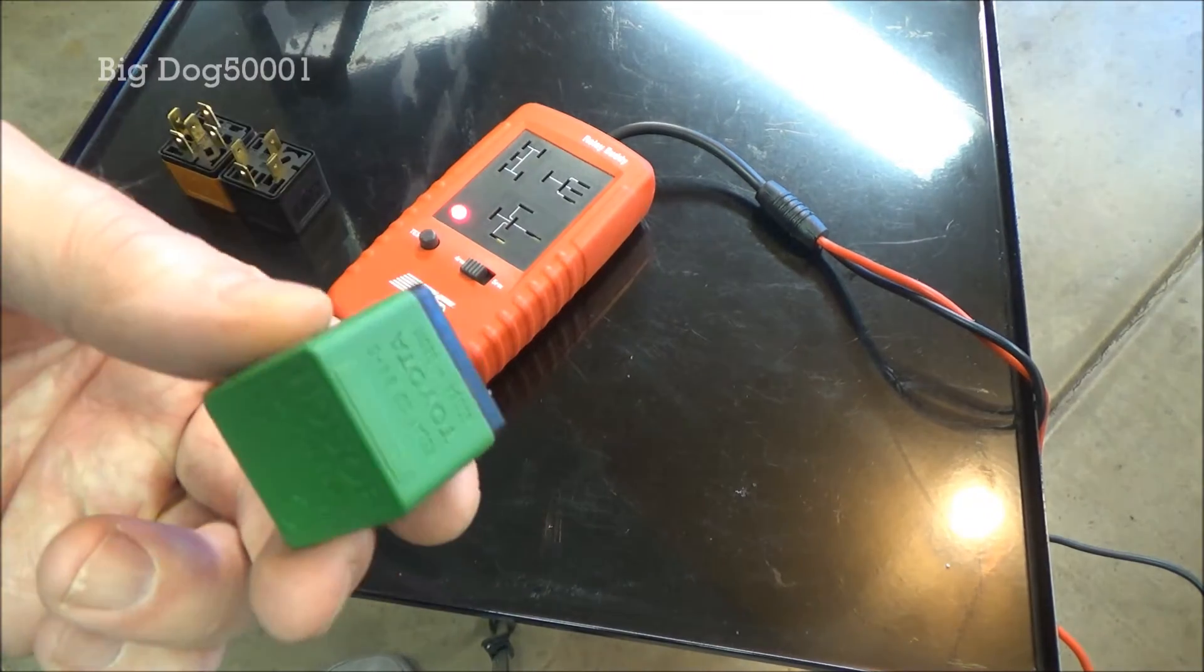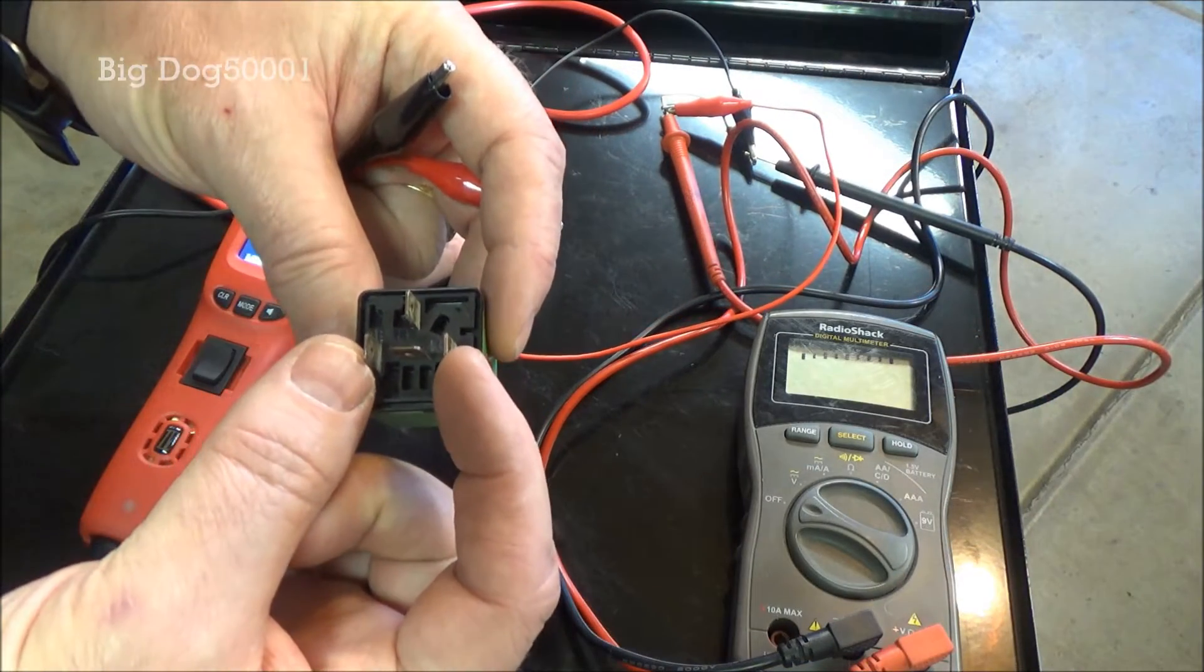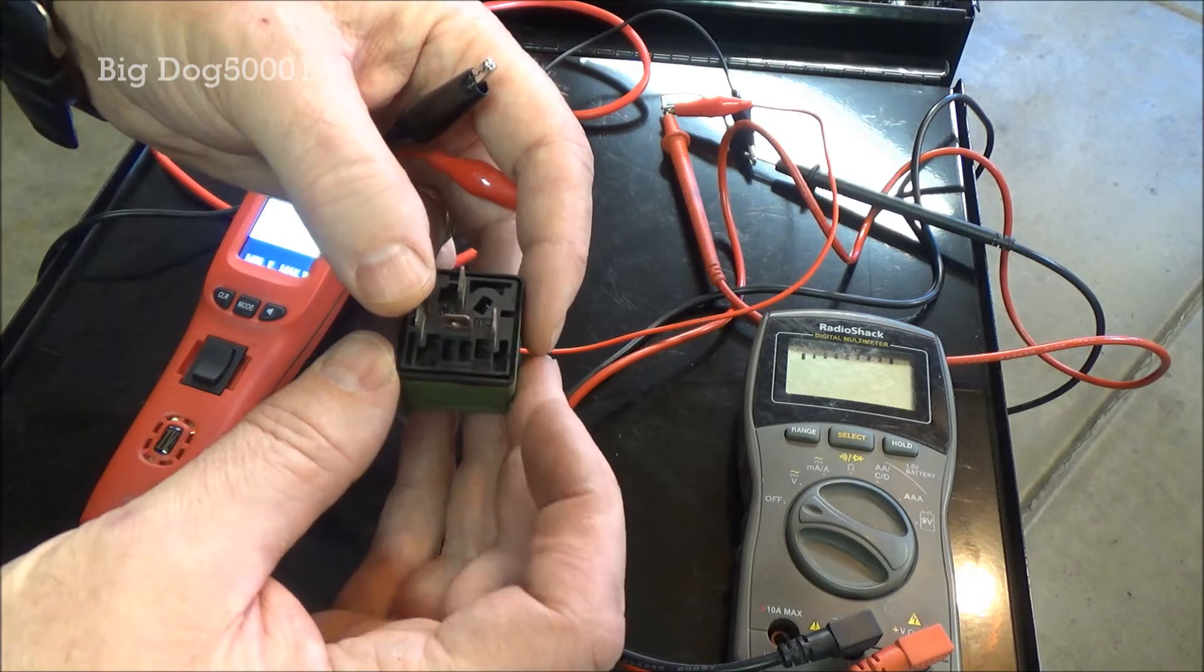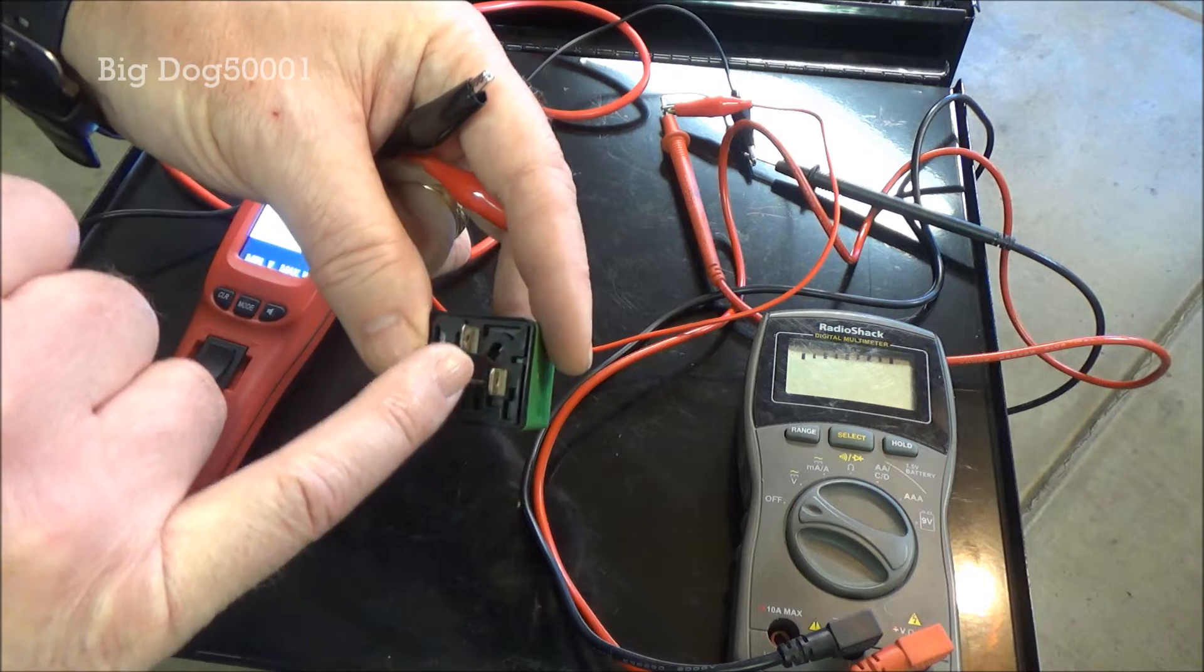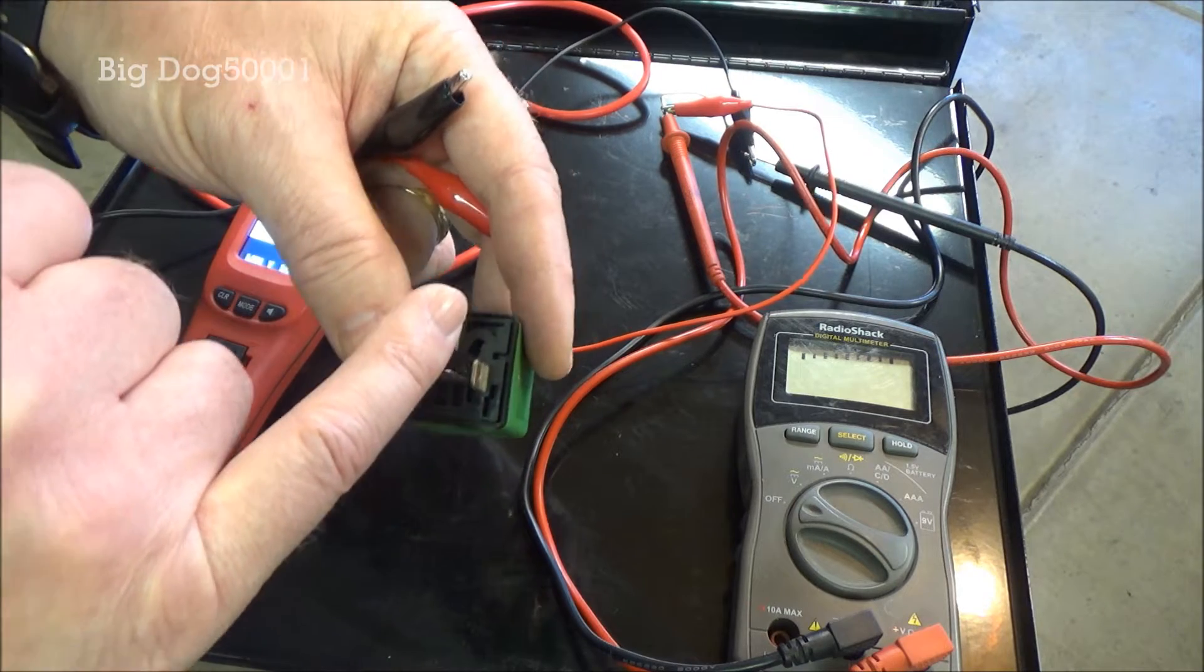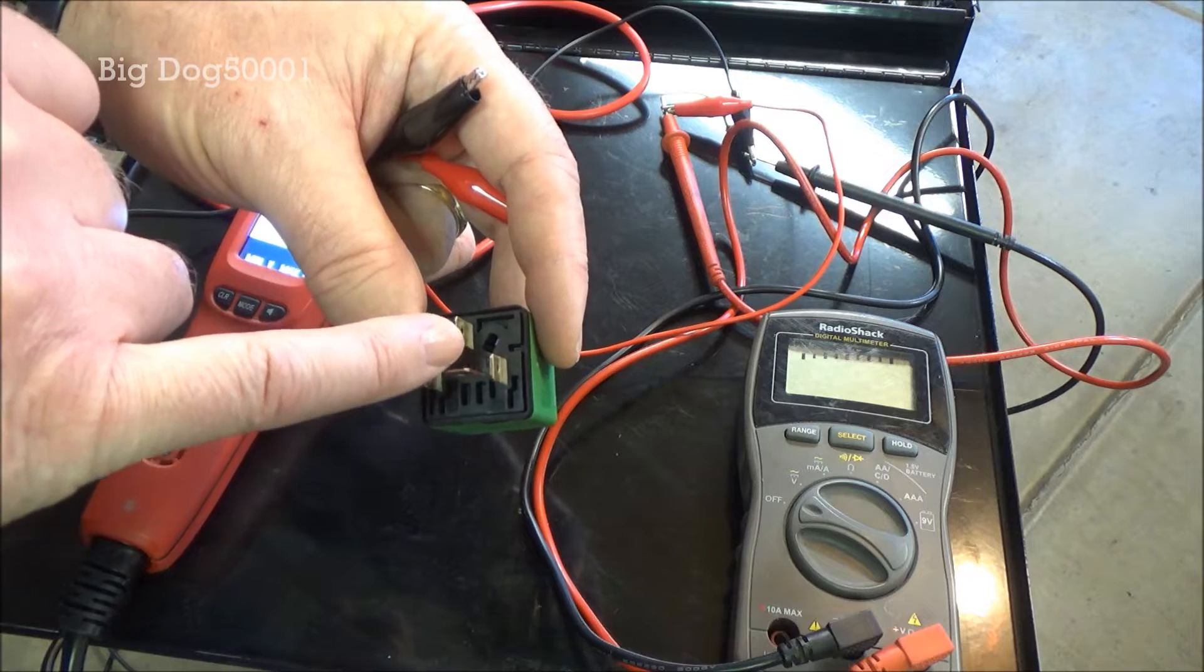All right, so on this one, these two pins on the outside are our control. So once we apply a power and a ground to these two, it will open the switch inside there. Right now there's continuity on the two middle pins, and then as soon as we power these two up, it'll open up.